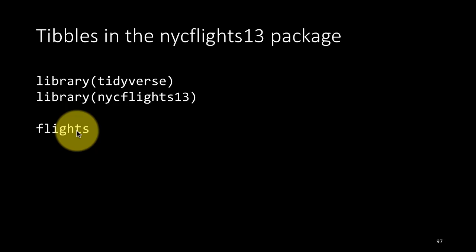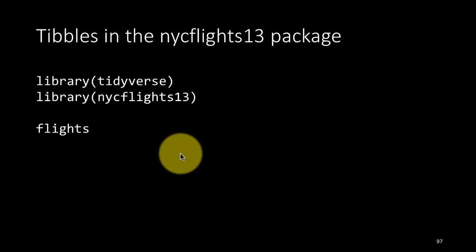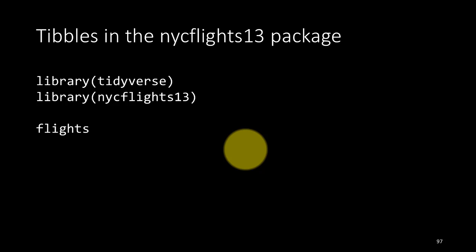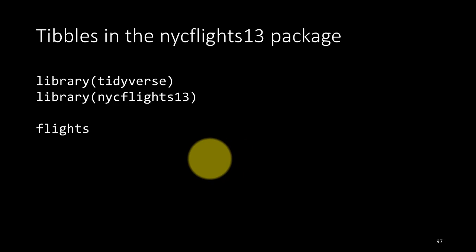The flights tibble has information about the carrier that operated a particular flight — for example, United Airlines, Delta, US Airways, etc. We have information about the tail number, which is the actual identifier of the specific aircraft used for a particular flight. It also has information about the origin and destination airports, currently shown only as codes. If you want more information about the specific aircraft, that comes from another tibble called planes. If you want more information about a specific airport, that comes from another tibble called airports. There is also a tibble called weather from which we can find out the weather conditions at the time a flight happened.